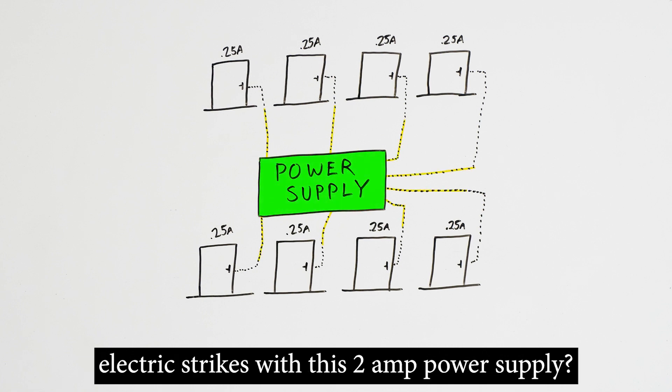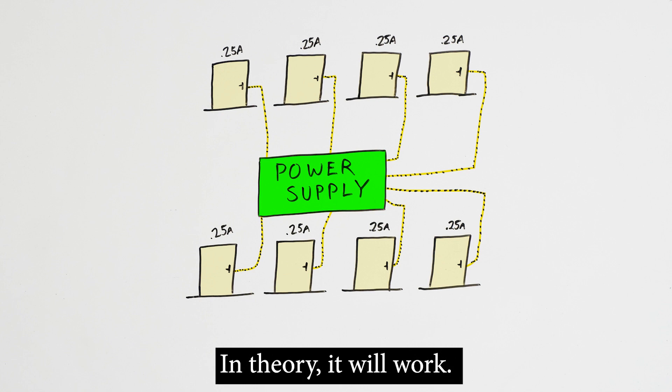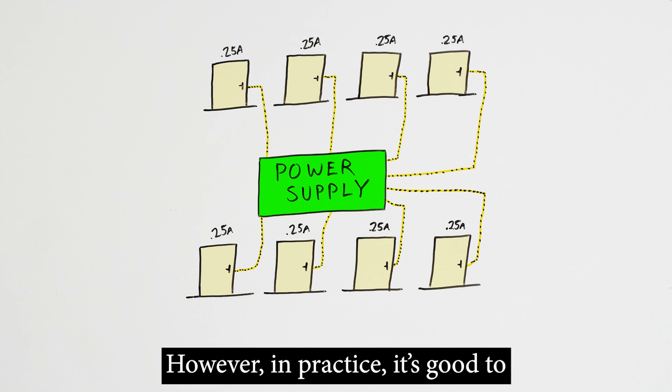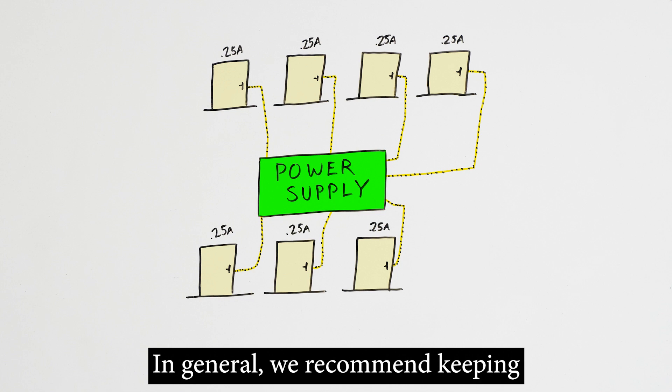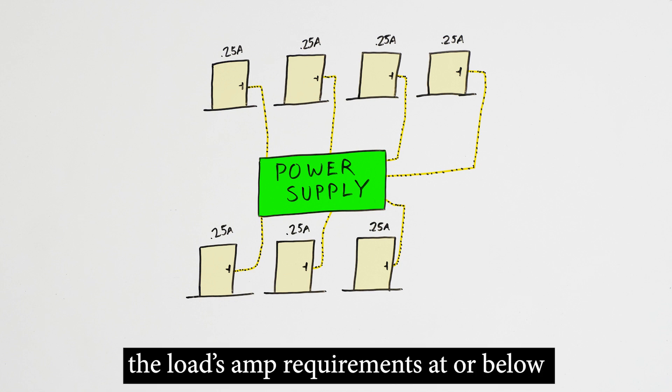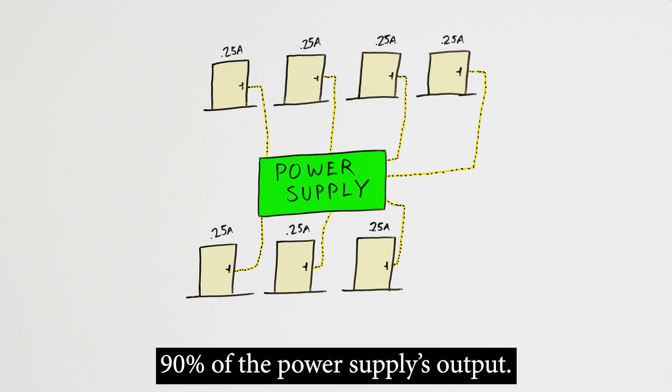What if you wanted to power 8 electric strikes with this 2 amp power supply? In theory, it will work. However, in practice, it's good to have a little wiggle room. In general, we recommend keeping the load's amp requirements at or below 90% of the power supply's output.